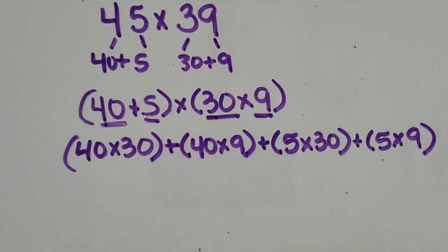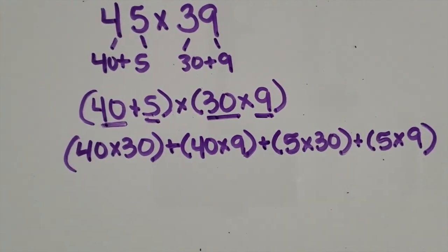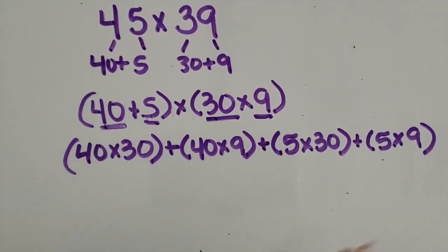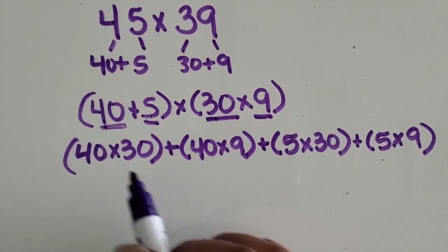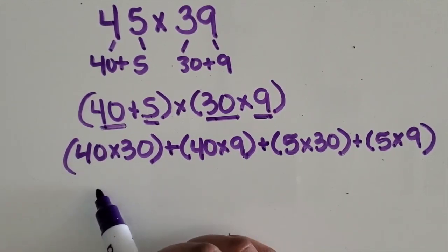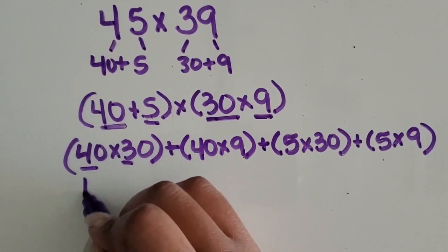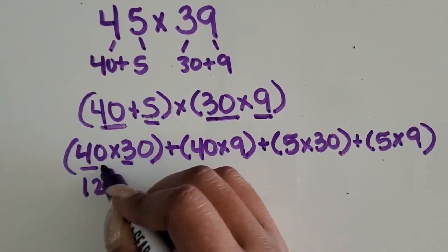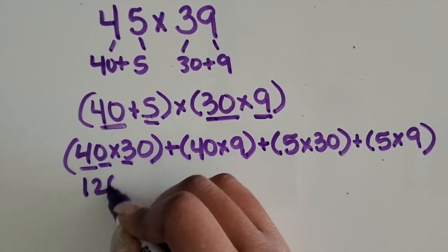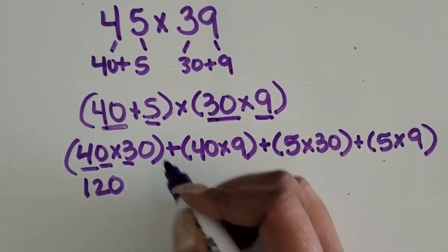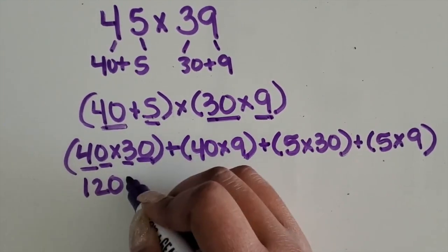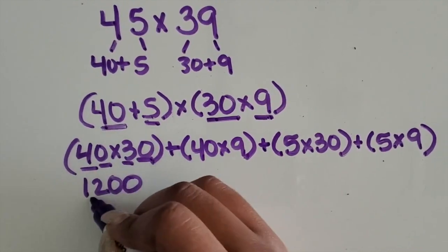It's just like when you had a one-digit number times a two-digit number — you just have more factors this time. Now we're going to find the product. So 4 times 3 is 12; 10 times greater than that would be 120; 10 times greater than that would be 1,200.